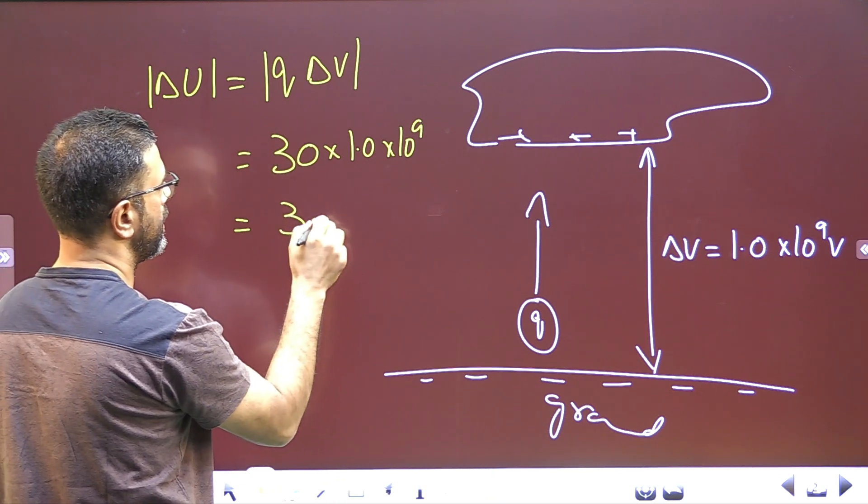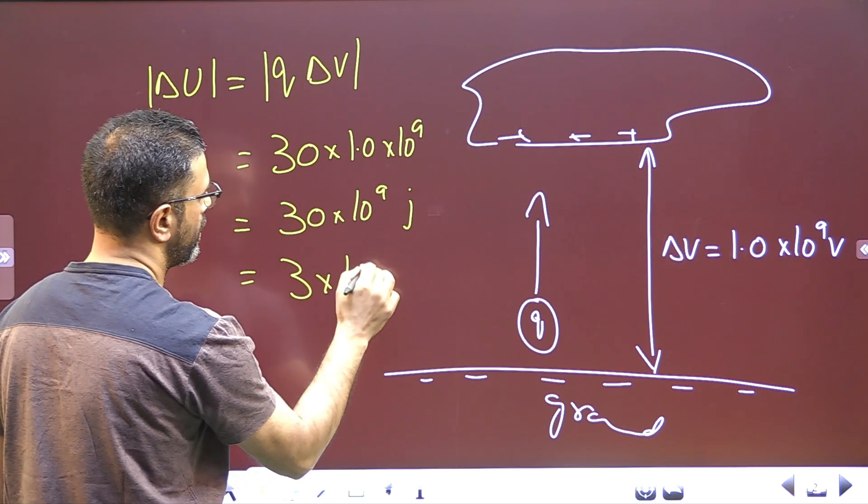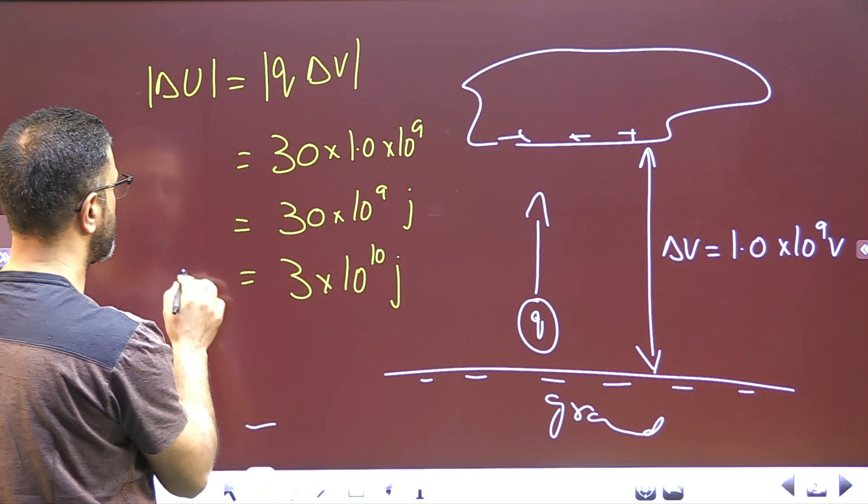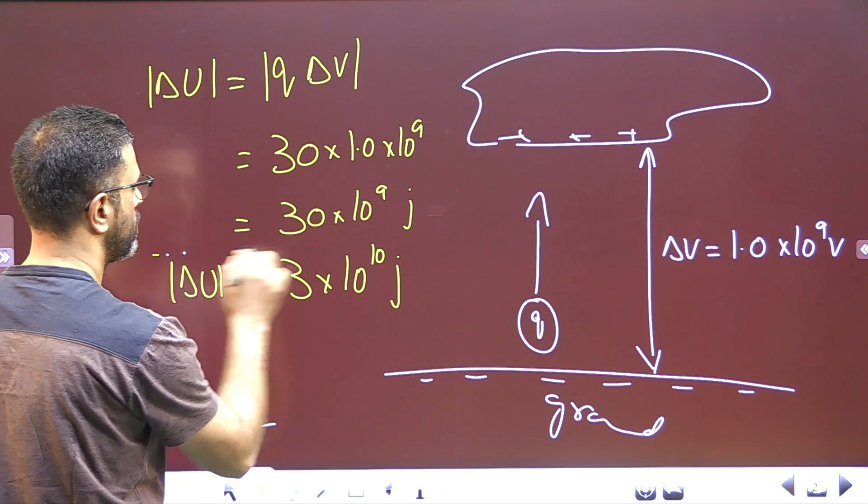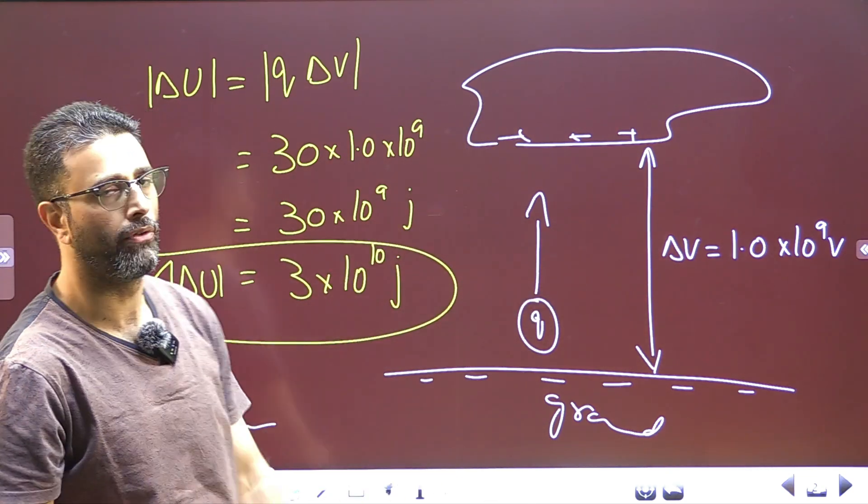So, 1 into 30 is 30 into 10 to the power 9 joules, or we can write 3 into 10 to the power 10 joules. So, this is the change in energy of this transferred charge Q, between the cloud and the ground, 3 into 10 to the power 10 joules.